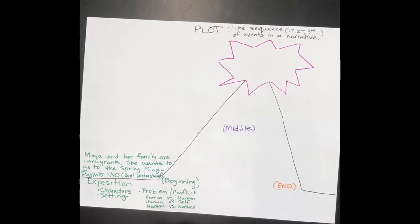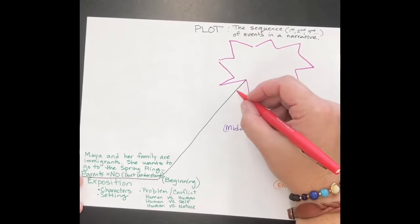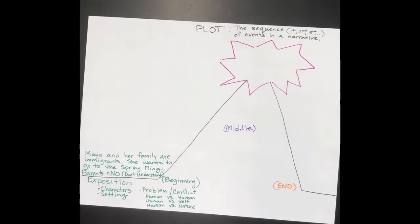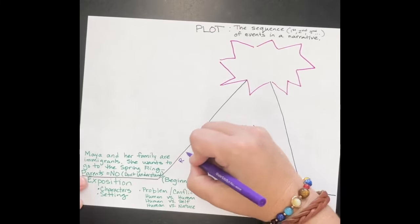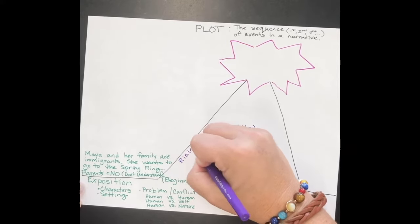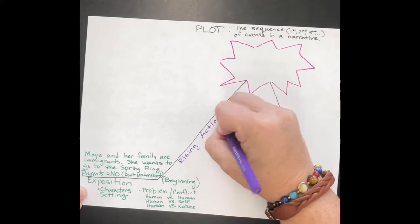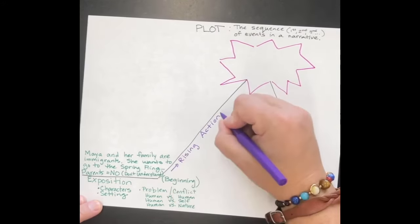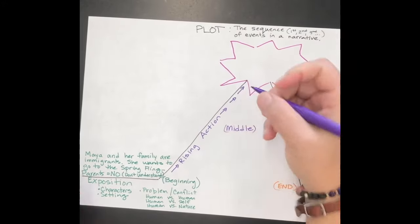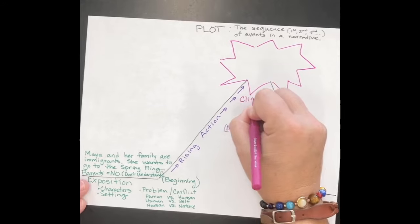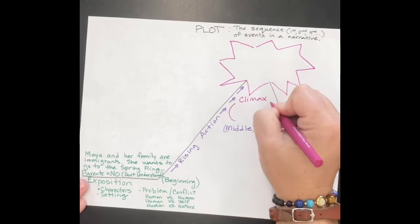In the middle, we're talking about the rising action. The middle in a narrative incorporates quite a bit. It has the rising action, which are the parts of the plot—the events that lead the plot forward. It's not every little detail, but those events and dialogue that move the story forward to the climax.